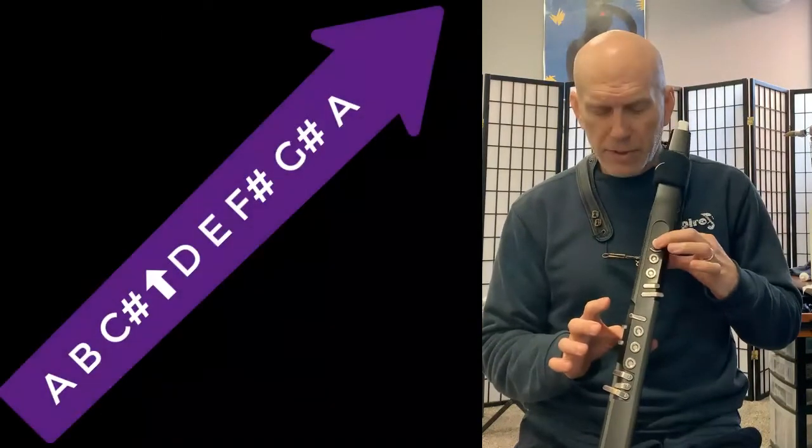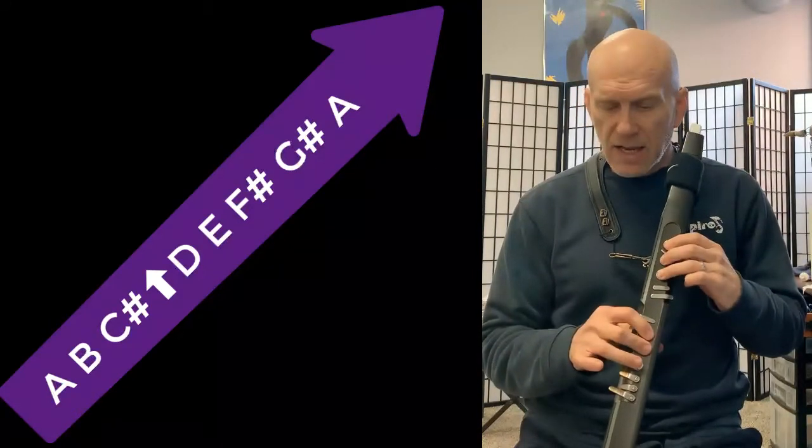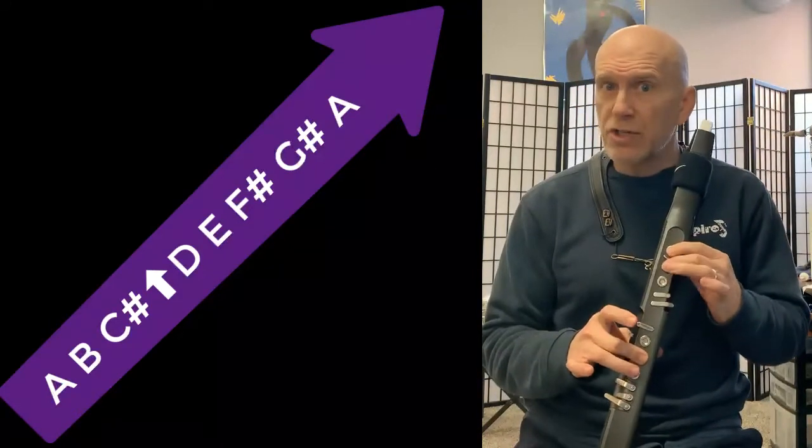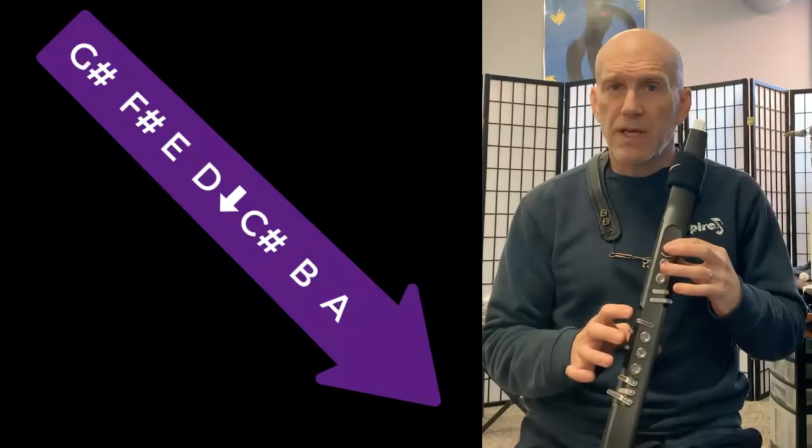So I'm going to say the A scale up and down. So it's A, B, C sharp, D, E, F sharp, G sharp, A, G sharp, F sharp, E, D, C sharp, B, A. We're going to play that one.